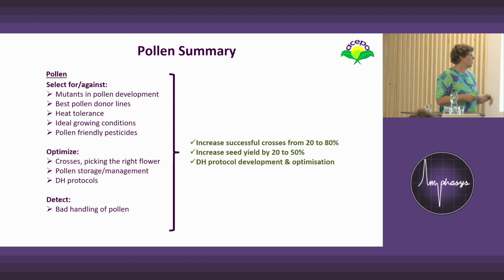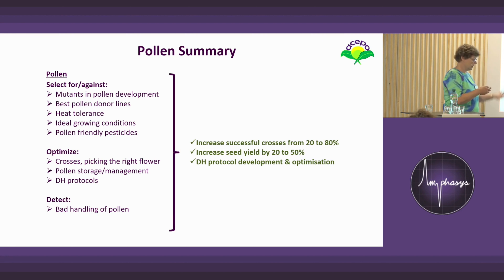What helped my customers by using this is that it helped them increase the success rate in crosses from 20 to 80%, increase seed yield, and it helps me develop double haploid protocols and optimize them. But what if you cannot explain your problems in seed production by the pollen measurements alone?